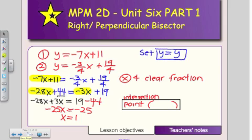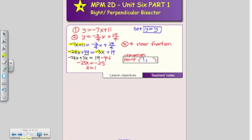And positive 1 is the X coordinate of my circumcenter, the intersection point. So what is missing? The Y coordinate of my intersection point. So I'm going to substitute X is equal to 1 into equation number 1. It's easier numbers.